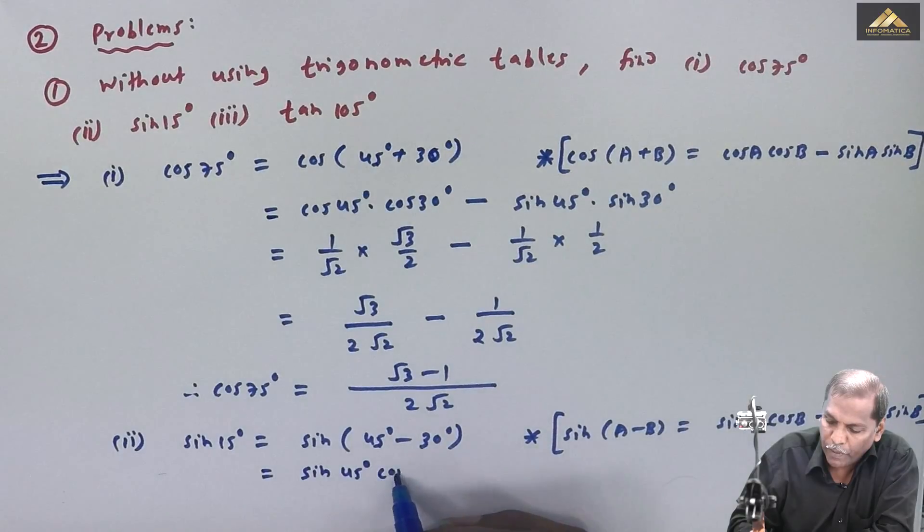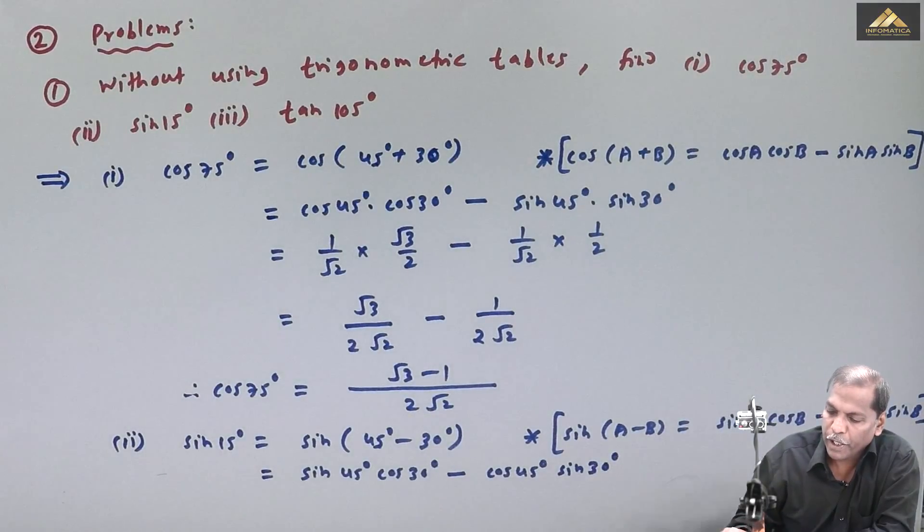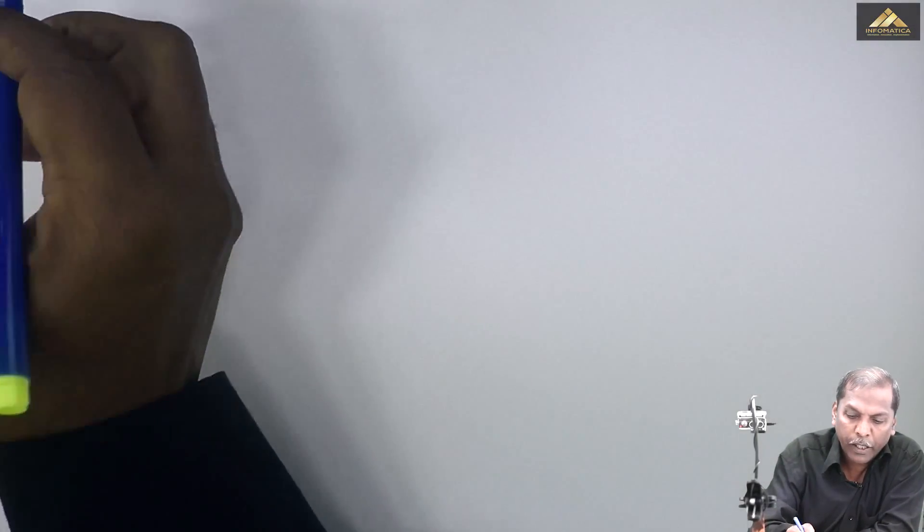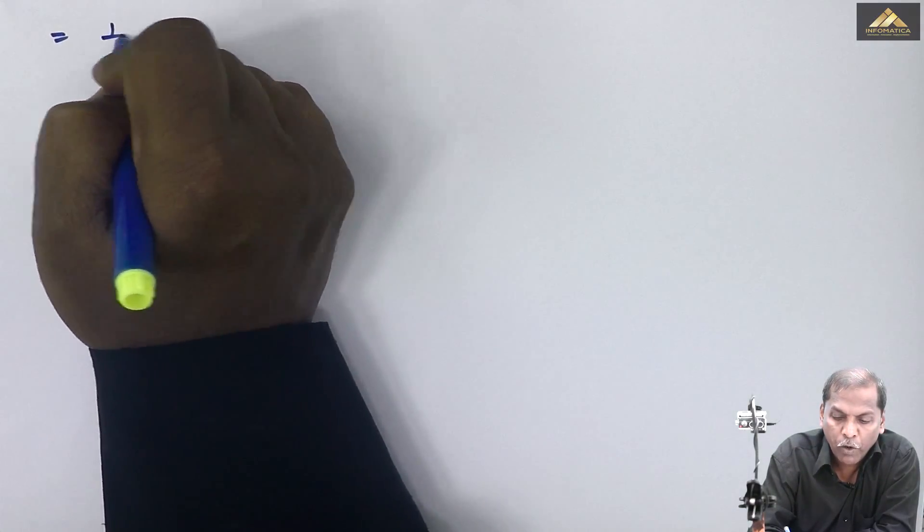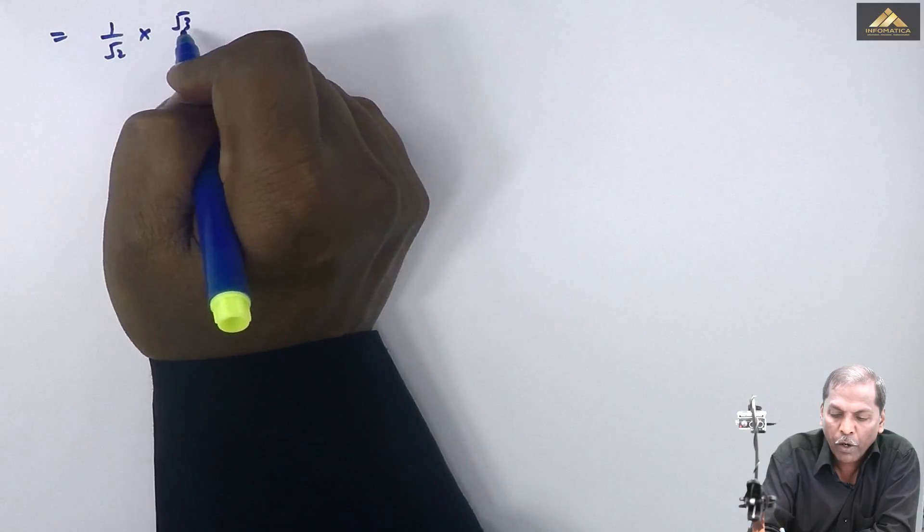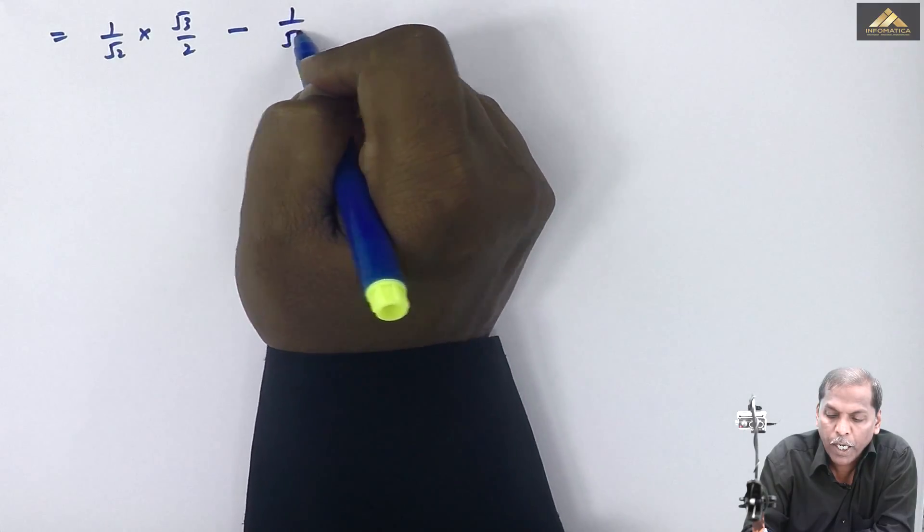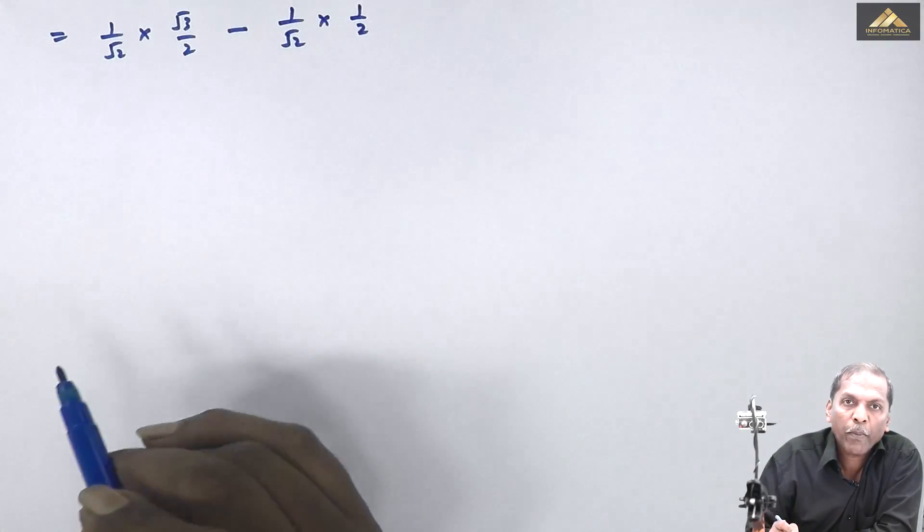sin 45 degree into cos 30 degree minus cos 45 degree into sin 30 degree. Now from the trig table, we replace these values. So the next step will be is equal to sin 45, we replace with 1 by root 2 into cos 30, whose value is root 3 upon 2, then minus cos 45, whose answer is 1 by root 2 into sin 30, whose value is 1 by 2.